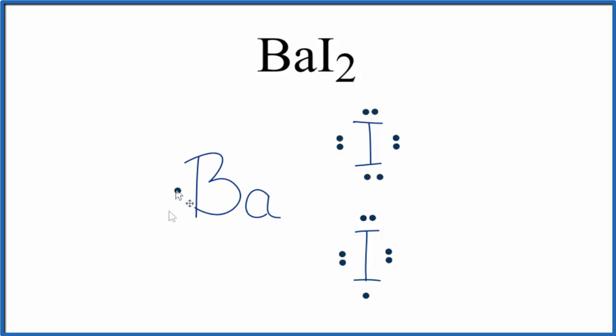That's very stable. And then we'll take this electron here and now this iodine has an octet. You can see why we need two iodine atoms for every barium atom.